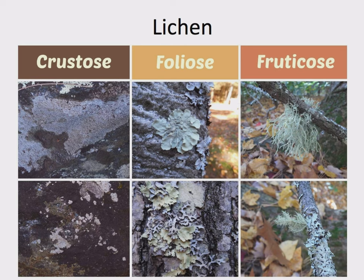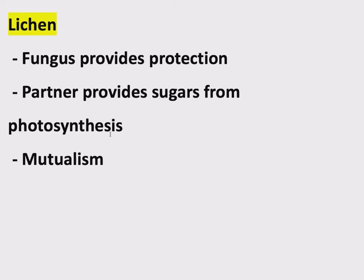Once again, we have the fungus growing in an environment that does not have readily available nutrients for it to absorb. This could be growing on a brick, a rock, or tree bark — a tree that's not dead, so it's not stealing nutrients from the tree. All fungi are heterotrophs. They need nutrients. They need carbon to survive. So their partner, just like the partner in mycorrhizae, is something that does photosynthesis. You can imagine the give and take: the partner provides sugars from photosynthesis and the fungus provides protection.